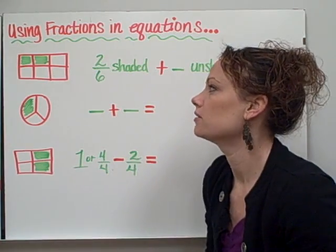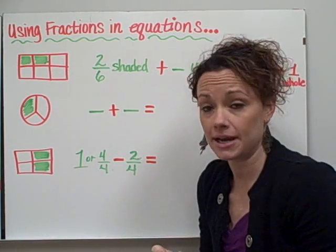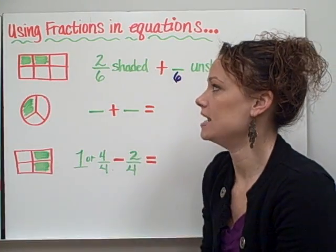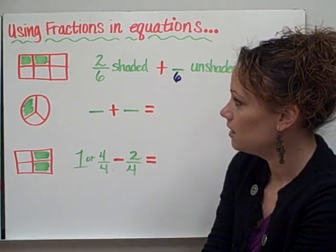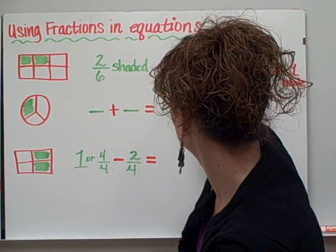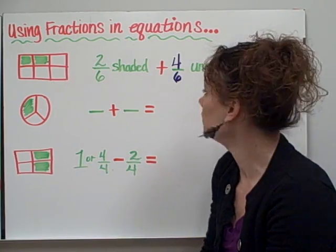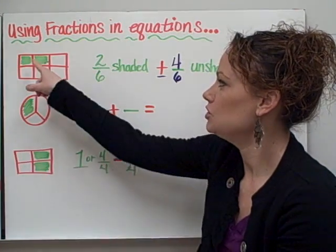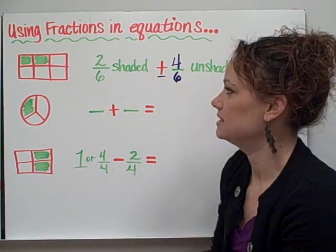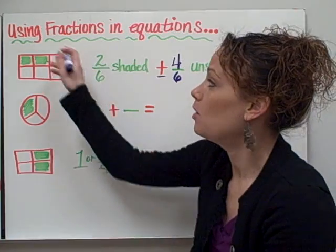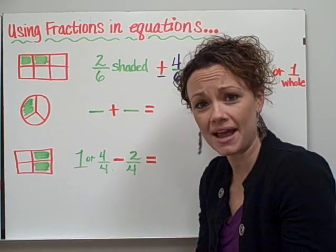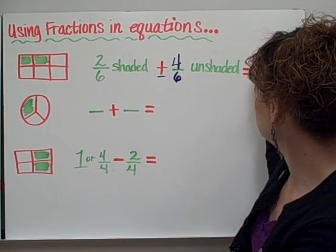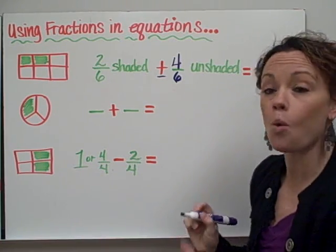So we can say that 2 sixths of this rectangle is shaded. Now let's take a look at the unshaded part. Just like our first fraction, we still have a denominator of 6, because there are 6 total pieces all together. After you count them up, you can clearly see that there are 4 unshaded pieces. So we can say that 4 sixths of the rectangle is unshaded. What happens when I add together 2 sixths that are shaded and 4 sixths that are unshaded? When I add them all together, I have my whole shape — the entire rectangle. So we can say 2 sixths plus 4 sixths equals 6 pieces out of 6 pieces, or 1 whole.